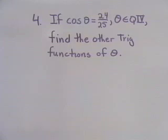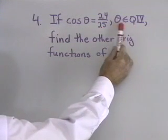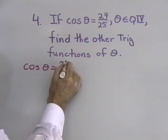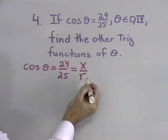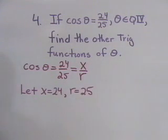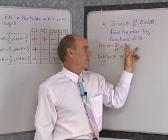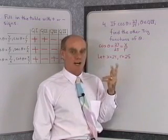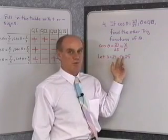Let's work another problem using this definition. If cosine θ = 24/25 and θ is in quadrant 4, find the other trig functions of θ. By the definition, cosine θ = x/r = 24/25. So let's let x = 24 and r = 25. Just because the ratio is 24/25 doesn't mean x must be exactly 24, but we can choose any point where x/r = 24/25, so we'll let x = 24 and r = 25.